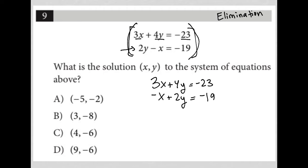If I combine these two equations together as they are, I won't eliminate the x—because 3x minus x is 2x—and I won't eliminate the y because 4y plus 2y is 6y. But if you cannot eliminate through simple addition, you have the power to multiply one or both equations by whatever number you want. So when I multiply the bottom equation by negative three, the top remains 3x + 4y = -23, but the bottom becomes -3x + 6y = -57.